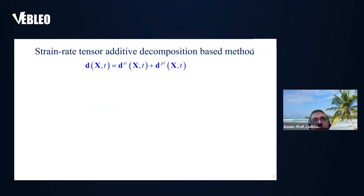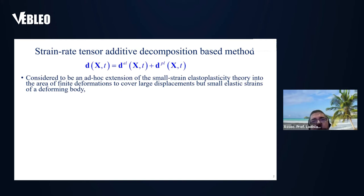There are two methods used to model finite strain behavior of material within the framework of finite strain elastoplasticity. One is based on the additive decomposition of the strain rate tensor into an elastic part and a plastic part. This method is considered to be an ad hoc extension of small strain elastoplasticity into the area of finite deformations, covering large displacement but small elastic strains.